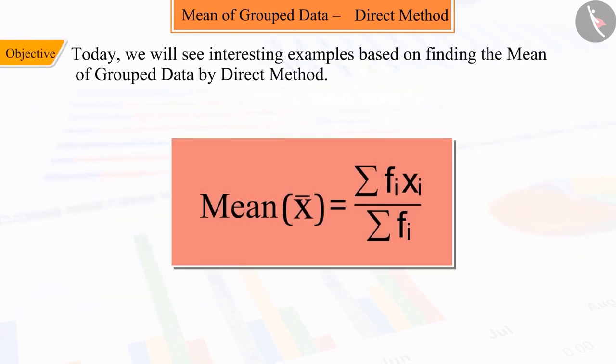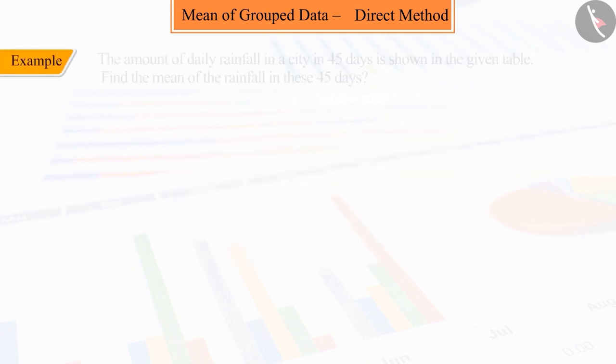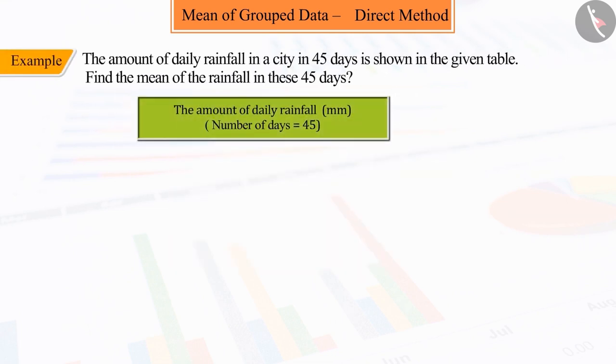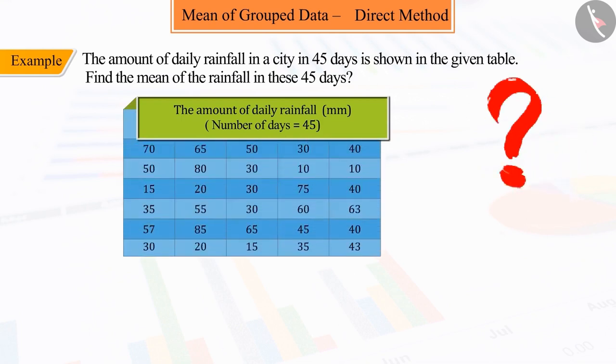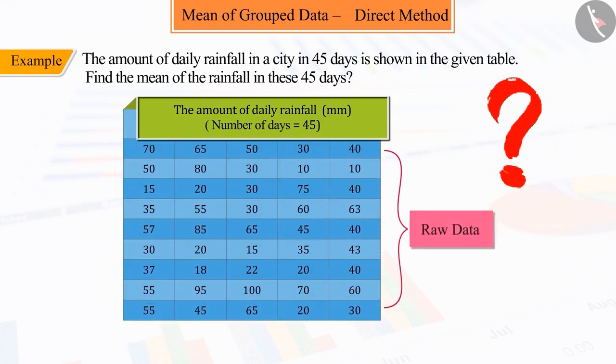Today we will see some interesting examples based on this. The amount of daily rainfall in a city in 45 days is shown in the given table. Find the mean of the rainfall in these 45 days.